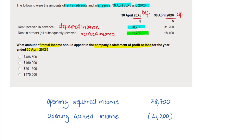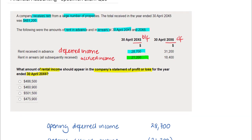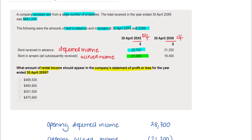Next, we're going to be adding the cash that has been received from the rented properties during the year. This is information that was given in the very first sentence of this question: the £481,200.